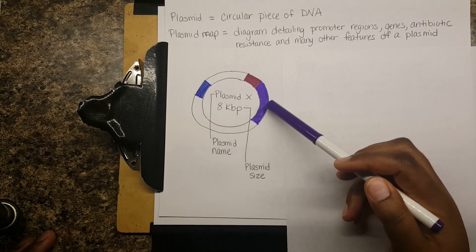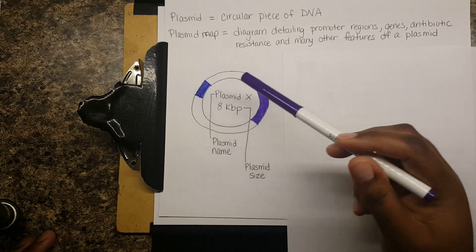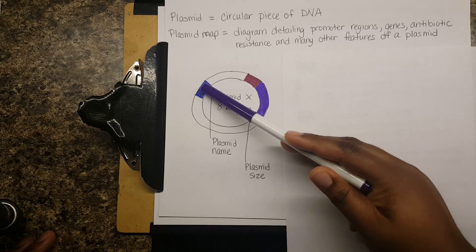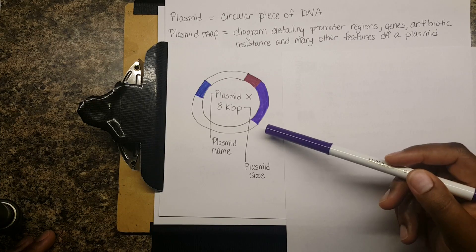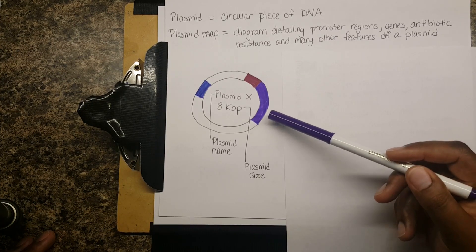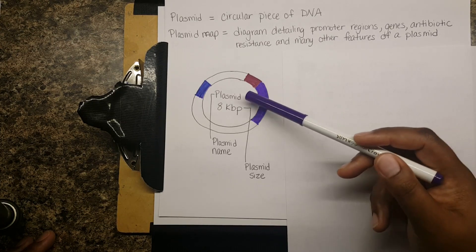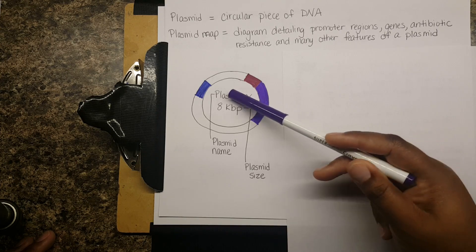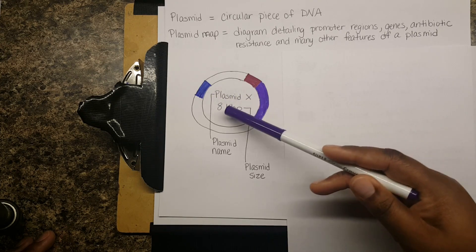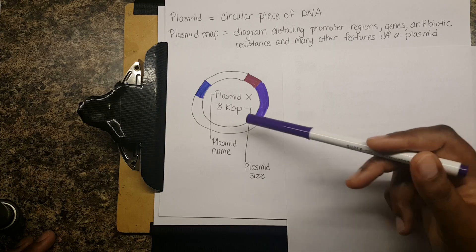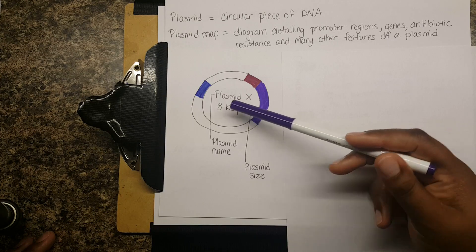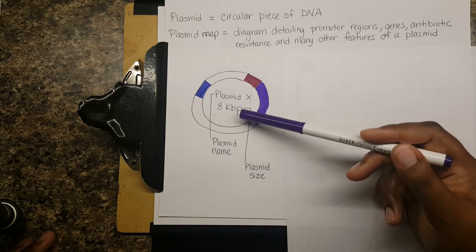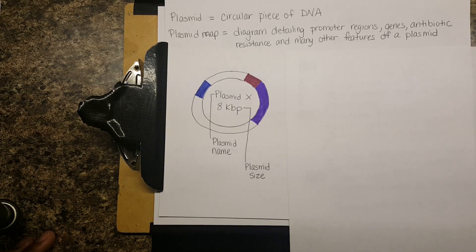This is a sample plasmid and I've got three different colors here — blue, burgundy, and purple. Usually in the middle you have the plasmid name and the plasmid size, typically given in kilobase pairs. The number of base pairs here would be 8,000, which is not small.